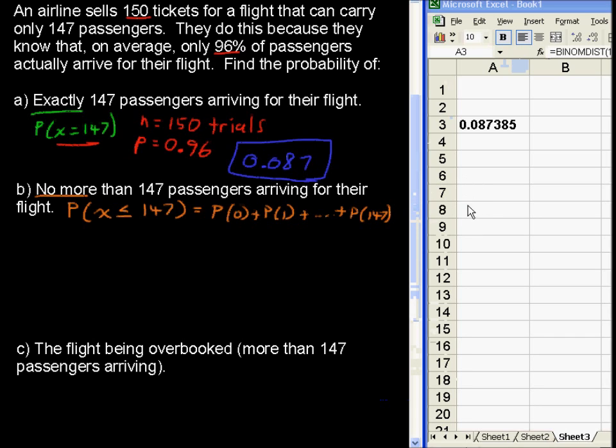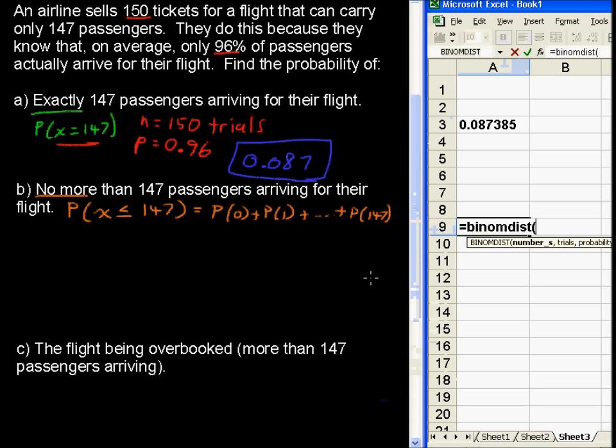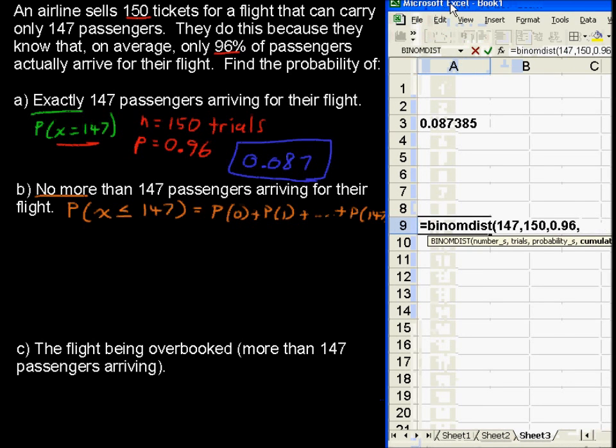So, I'll show you what we do here. I'm going to put it right down here to show that it goes with this example. And that equals binom dist number of successes, 147. We want no more than 147. Out of how many trials? 150. The probability of success is still .96. And now, we're asking, is it cumulative? So, I am going to type in true. True. We hit enter,